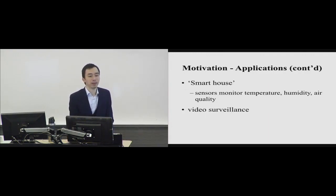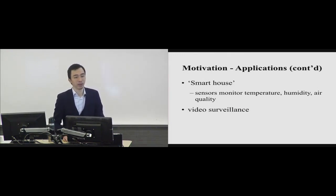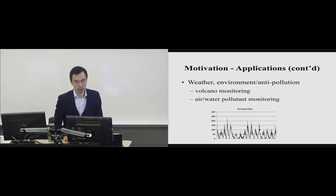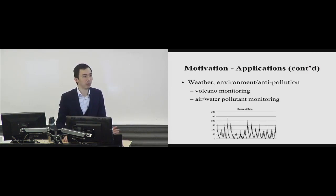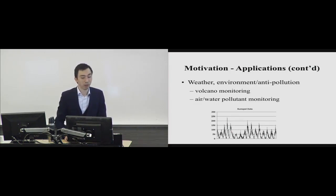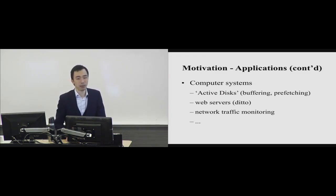Smart homes have chips in light bulbs and sensors measuring brightness, humidity, and more. Video surveillance analyzes a time series of images to discover anything out of the ordinary. Weather forecasting is a common everyday example — because of good time series prediction, we know what to wear each day. Computer systems, network traffic, and disk read/write operations are all time series as well.